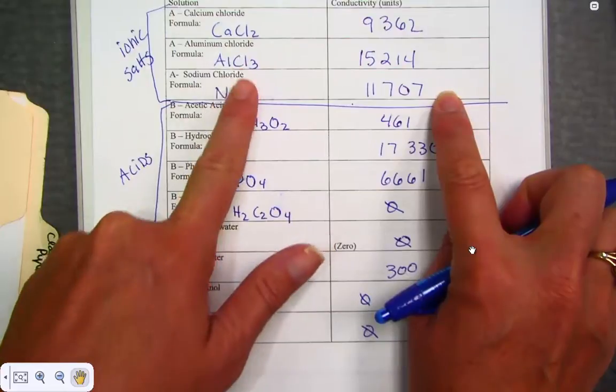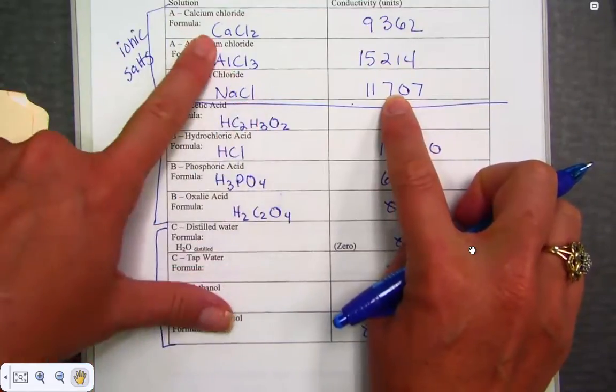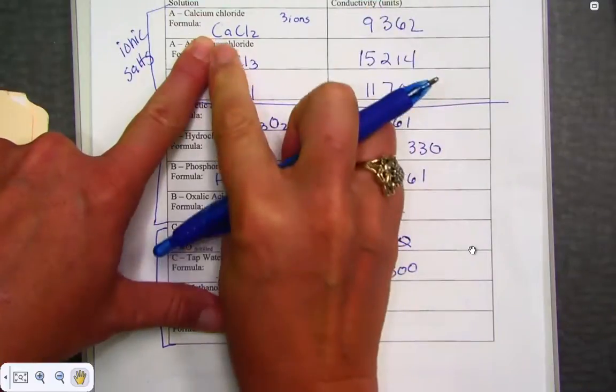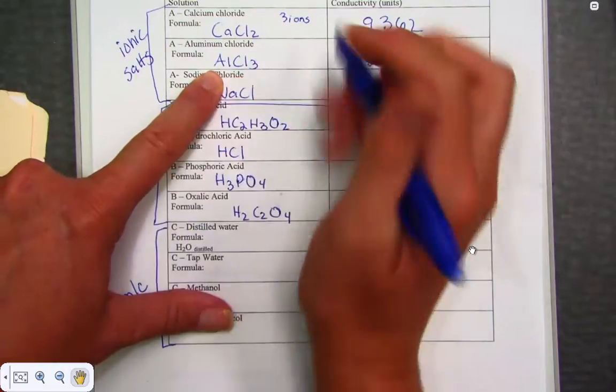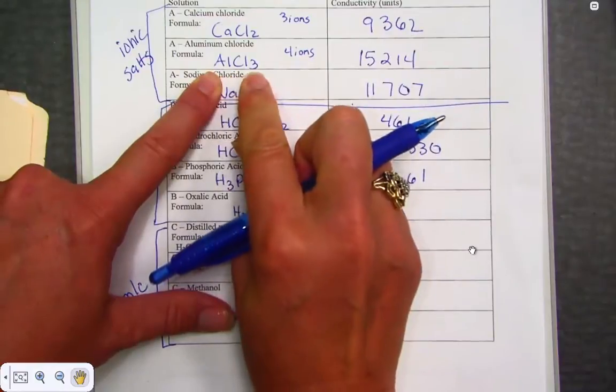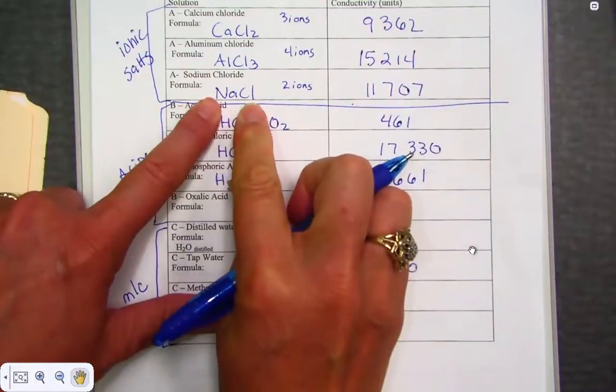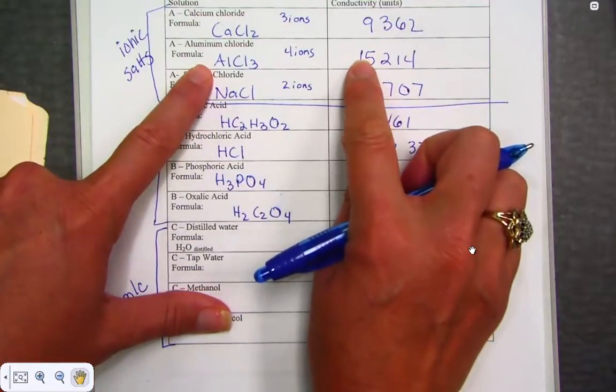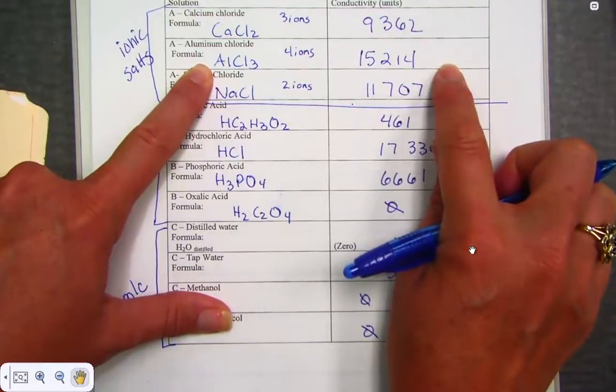I noticed that the number of particles that would dissociate also plays a role in the value that I've recorded. For instance, when calcium chloride dissociates, breaks apart into its ions, I realize that I'm going to get a total of three ions in solution, one calcium and two chlorides. When aluminum chloride dissociates, I'm going to get a total of four ions, one aluminum and three chlorides. And here, sodium chloride, let's go into two ions, one sodium and one chloride. Notice how our conductivity readings verified that the more ions we have in solution, four, then three, then two, the higher the conductivity, the brighter the bulb would indeed glow.